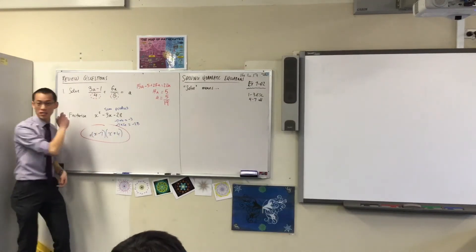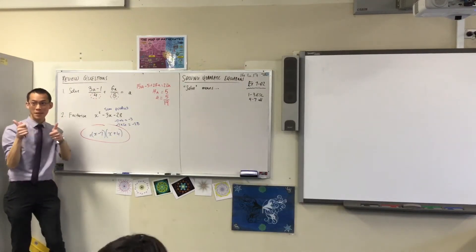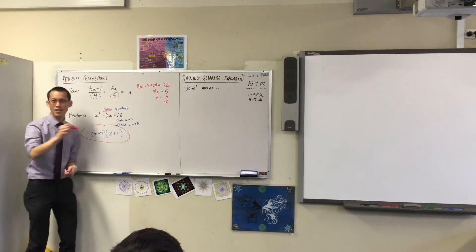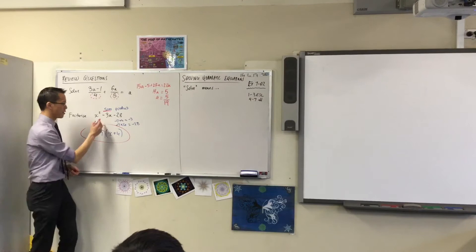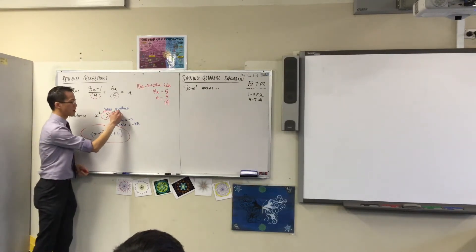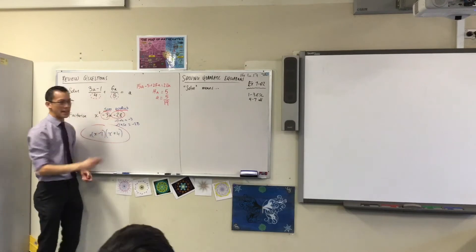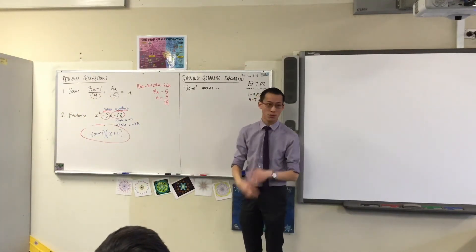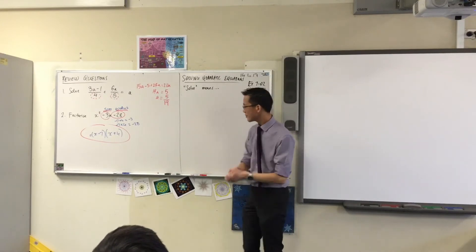Last one down here. Who agrees with this factorization? Yep. Thumbs up? Yeah. You can see Laura helpfully has written down SUM to indicate the significance of the negative 3 and PRODUCT to indicate the significance of the negative 28. And sure enough, negative 7 and positive 4, they do the job. Okay. Wonderful.